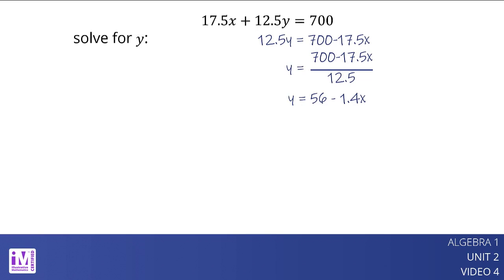Or y equals 56 minus 1.4x. Notice that y equals 56 minus 1.4x, or y equals negative 1.4x plus 56, is written in slope-intercept form.